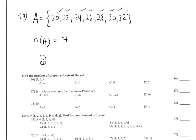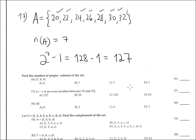The number of proper subsets is 2 to the 7 minus 1. 2 to the 7 is 128, minus 1 is 127. So the answer is 127. The answer for the other problem was 7.